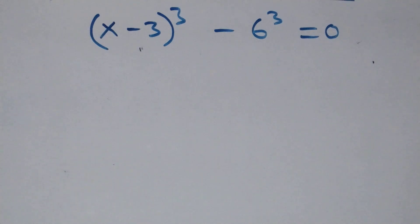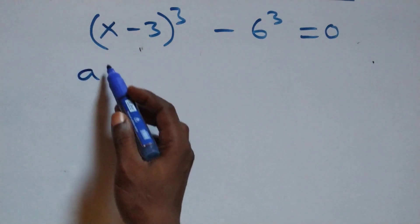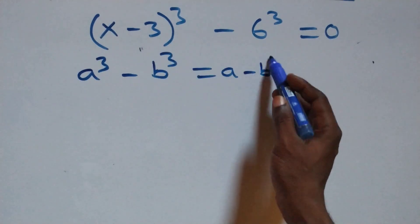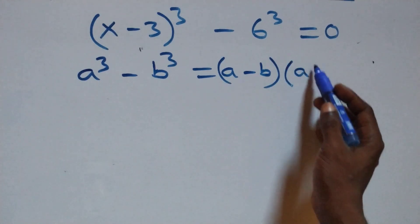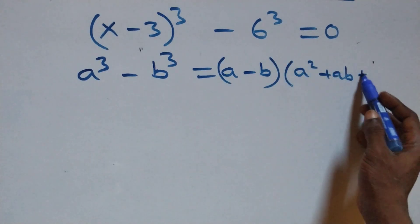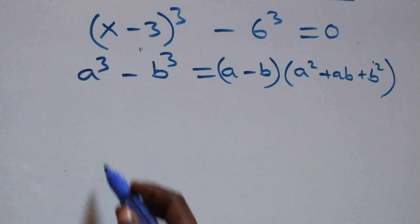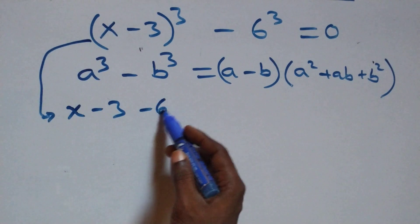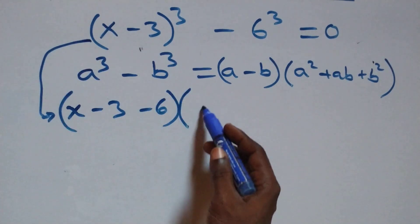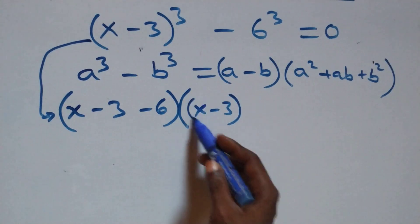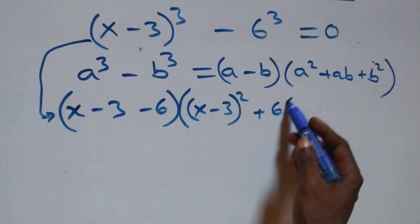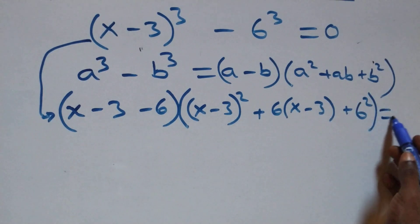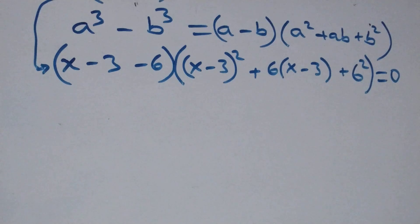Solving from the second case: this follows the difference of cubes, a^3 minus b^3 equals (a minus b) times (a squared plus ab plus b squared). This becomes (x minus 3 minus 6) into brackets, then open bracket (x minus 3) squared plus 6 times (x minus 3) plus 6 squared, close bracket, equals 0.